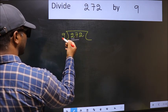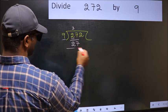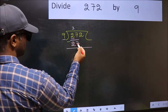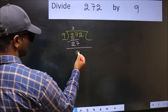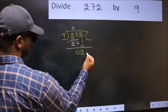When do we get 27 in the 9 table? 9 times 3 is 27. Now you should subtract. 27 minus 27 is 0. After this, bring down the next number. So bring down 2.